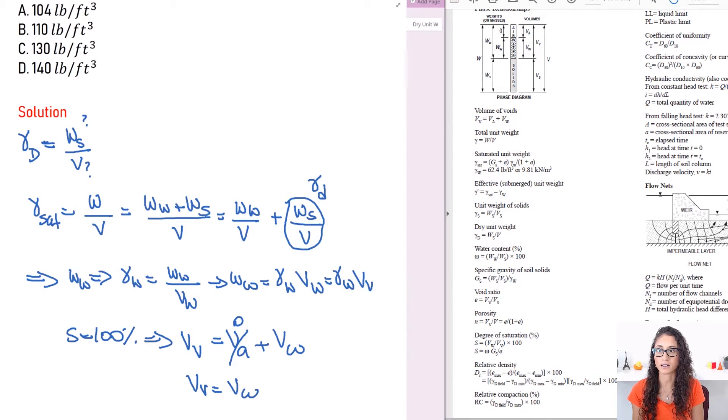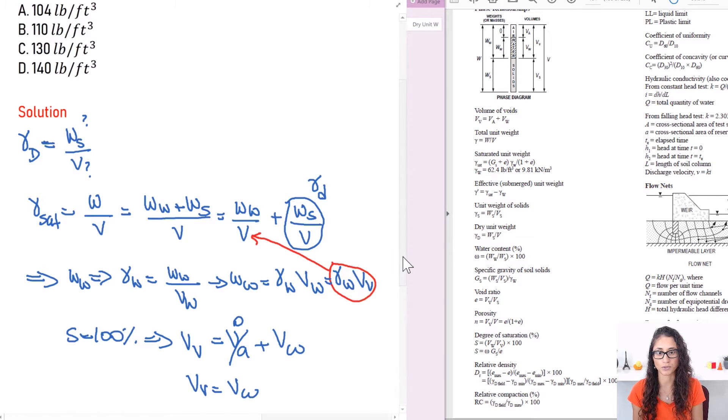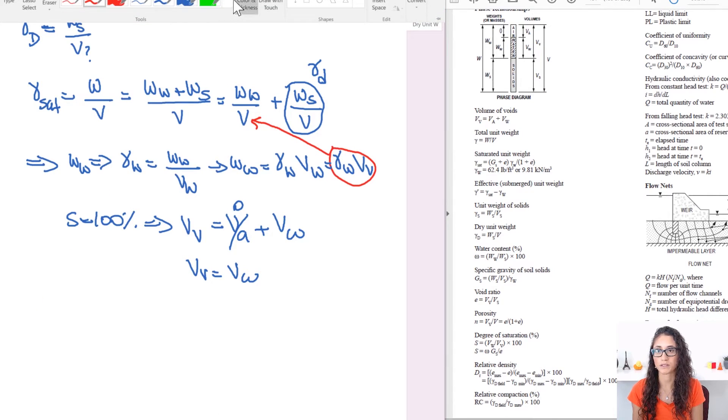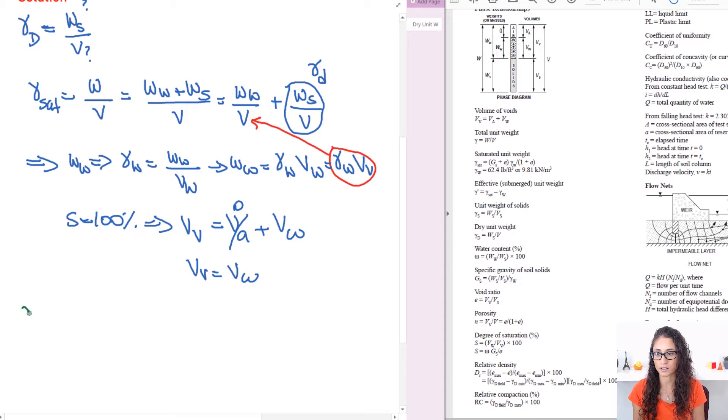Let me go back and let me select different color. Let's plug in this term right here in this equation and see what we're going to get. Okay. So we have gamma saturated is equal to the weight of the water. Now we're going to substitute that with the unit weight of the water times the void volume and we're going to divide it by V plus the dry unit weight. Remember this we replace it with gamma D.